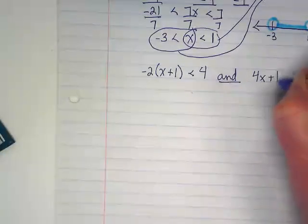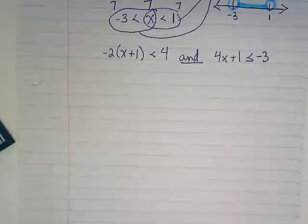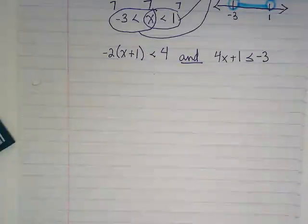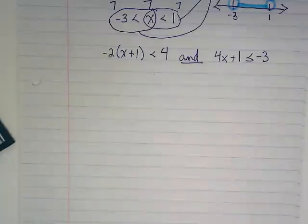4x plus 1 is less than or equal to negative 3. When this one's finished we will rewrite it as one long statement with an x in the middle. I'm going to pause and let you guys work on this on your own and we'll compare back together in a moment.